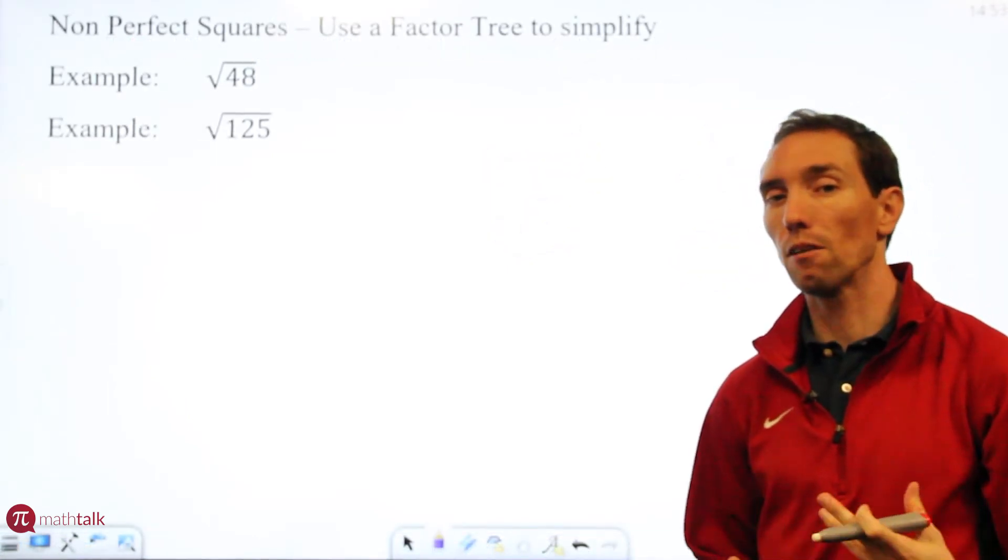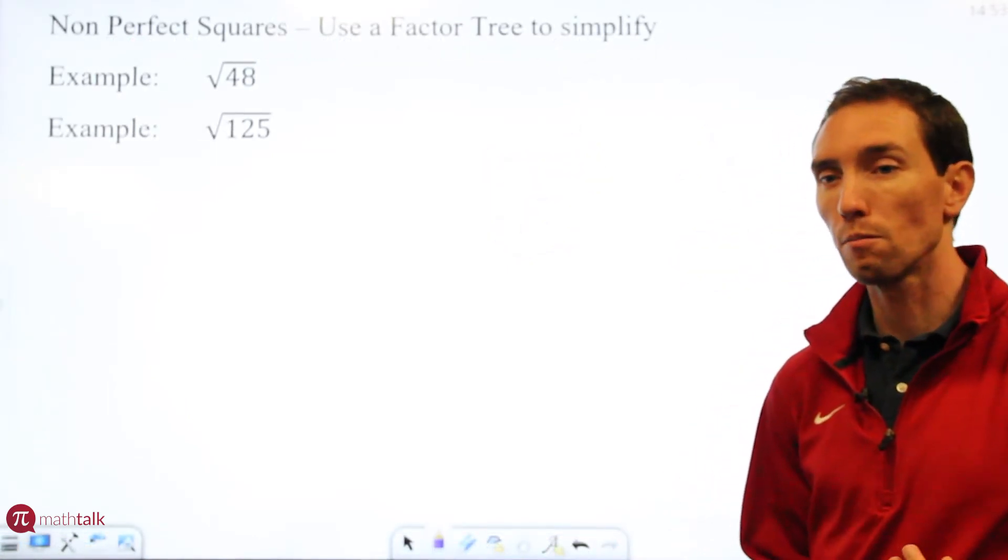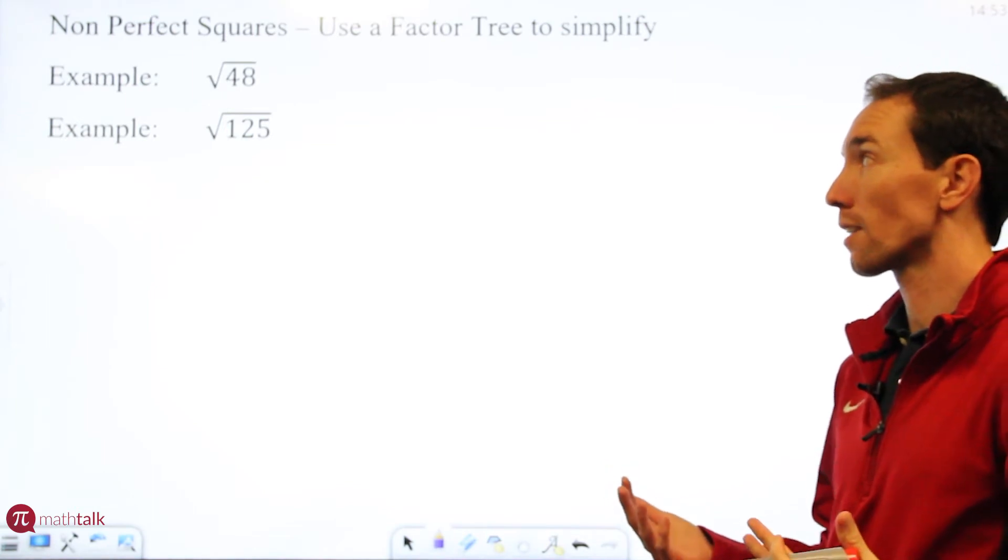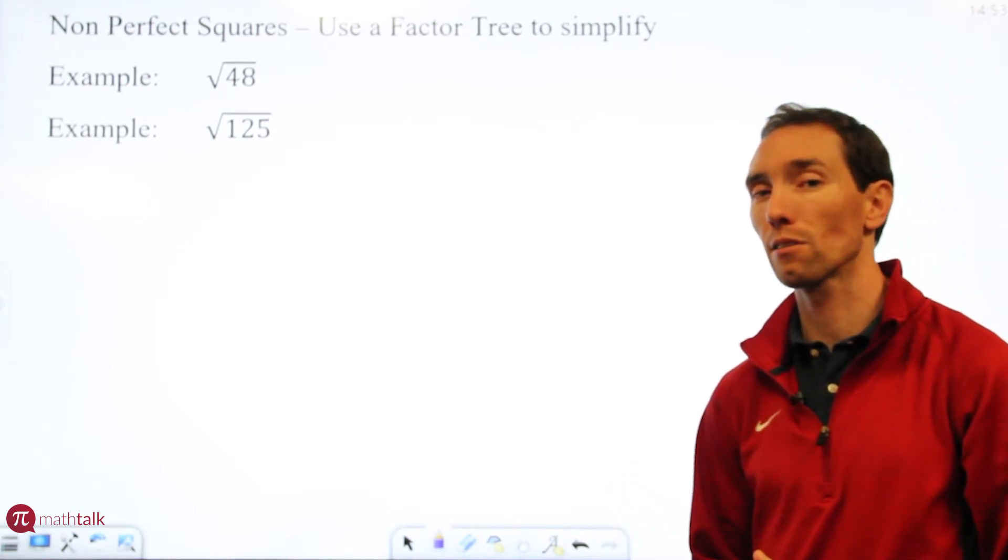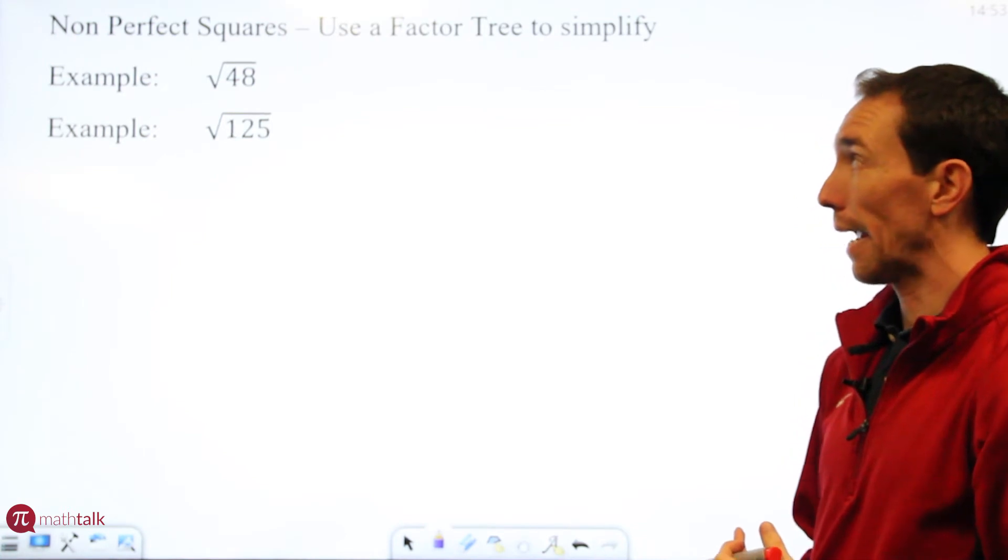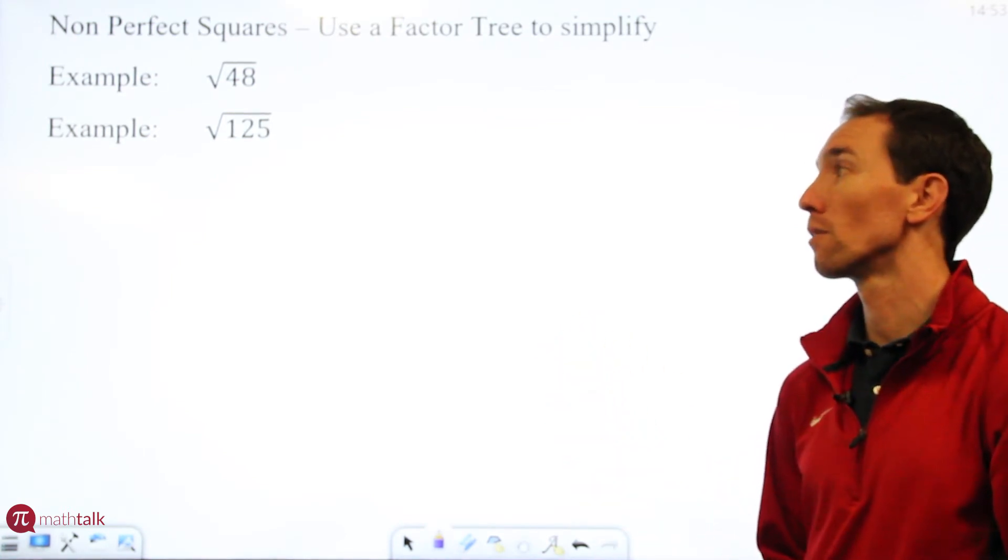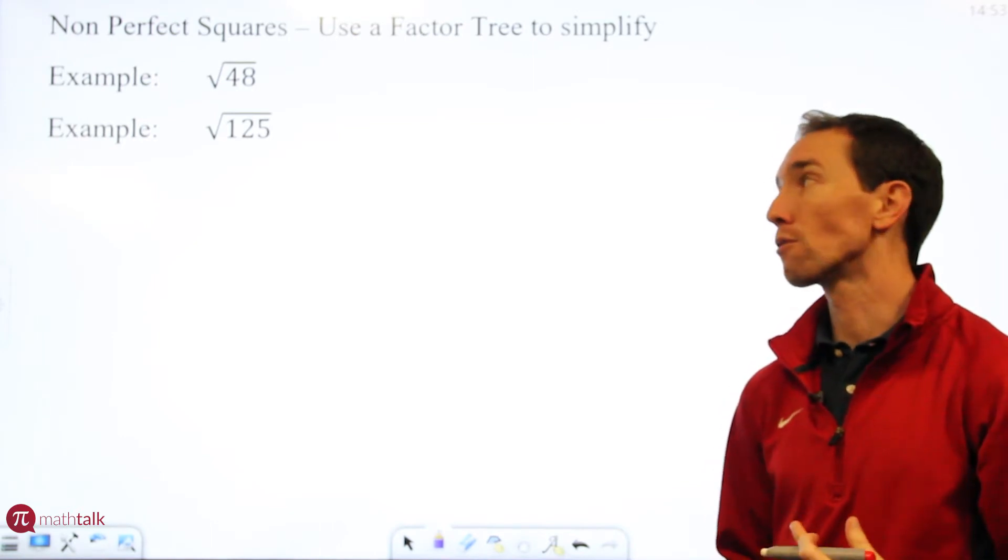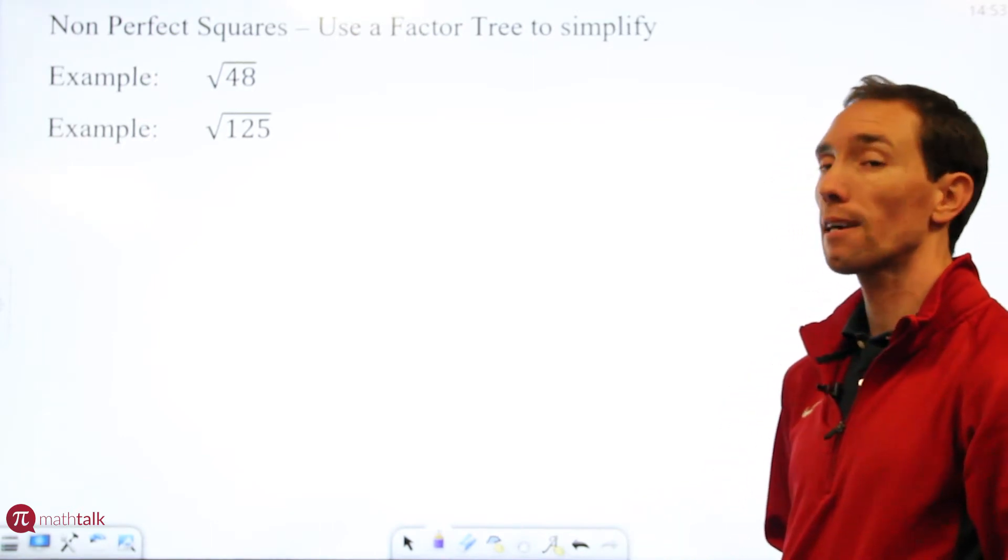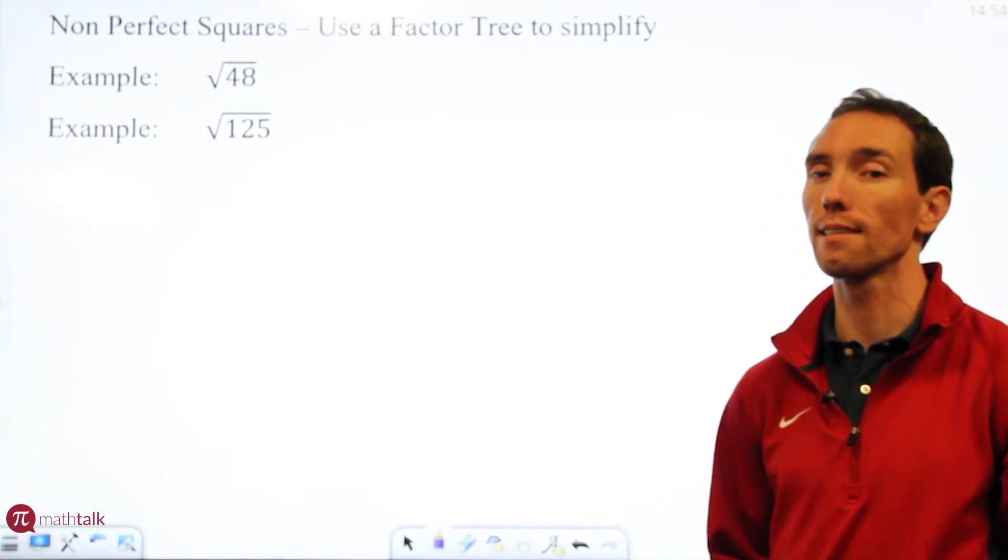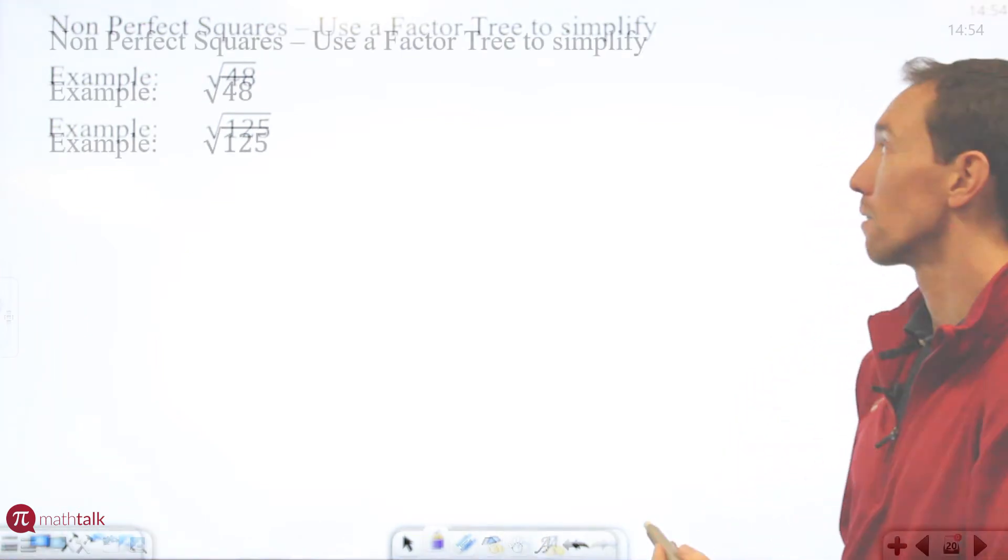So if you see examples like this please keep in mind there is a difference between these two values. Another thing I want to cover is that there are perfect squares but there's also non-perfect squares and non-perfect square roots. Some examples would be like the square root of 48 and the square root of 125. When you get to examples like this I would recommend using what's called a factor tree to simplify them. So let's take a look at what that is.